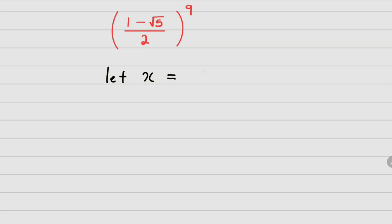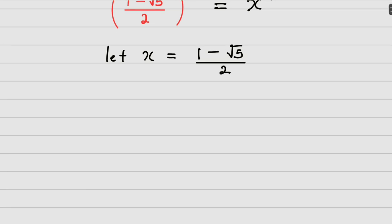Let x be equal to (1 minus root of 5) over 2. I'm doing this because I want to reduce the ambiguity of the question, so that at the end all I'm looking for is x raised to the power 9. I'll manipulate to get an expression that will fit in to solve this question at once. So the next thing I will do is to cross multiply, so that I'm going to have 2x equal to 1 minus root of 5.